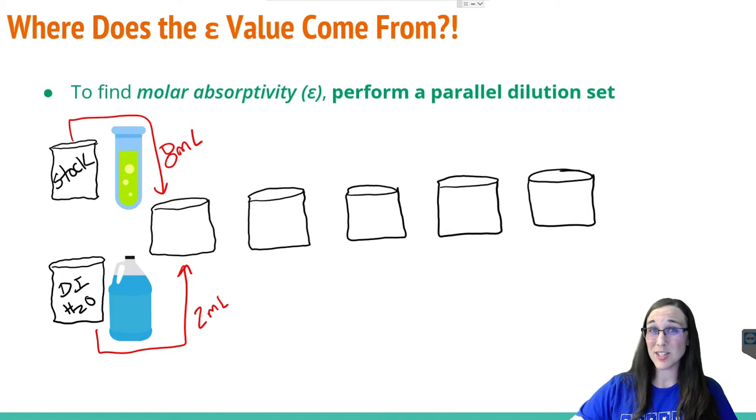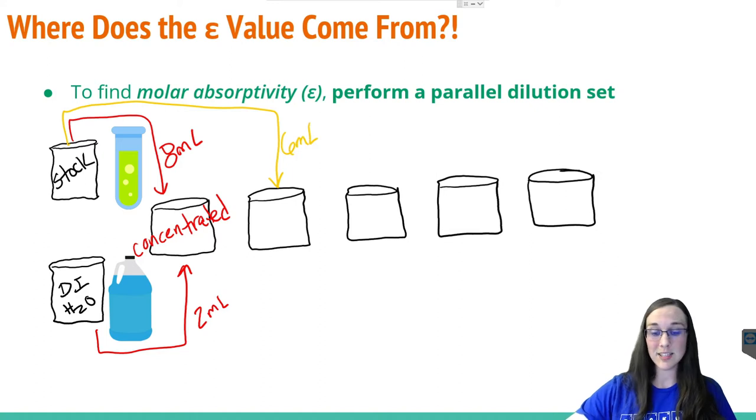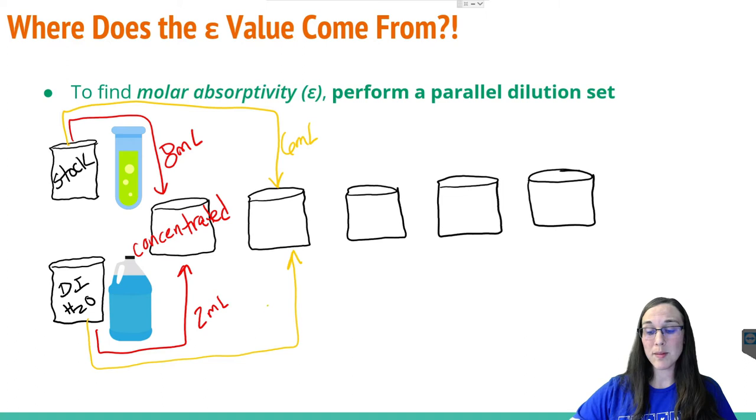We want a whole set of dilutions, so we're going to keep lessening the stock and increasing the DI water to decrease the concentration of the stock. Let's say for the next one we have six milliliters of the stock, so less stock, but we add more water. This time we're going to add four milliliters of water.